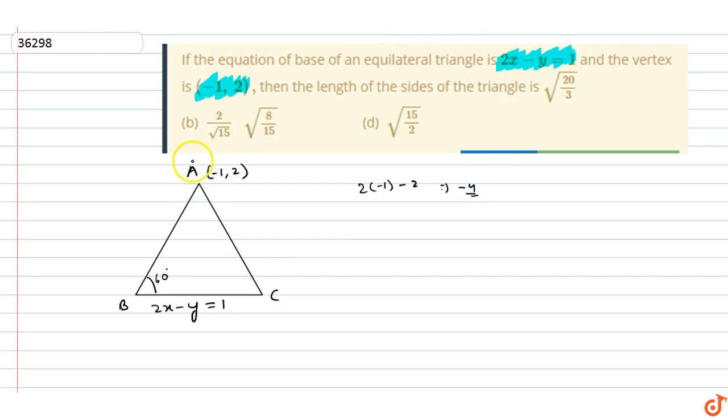Now we have the vertex here, and we draw a perpendicular. This is our perpendicular, this is D. So if we have AD, what will be the length?